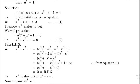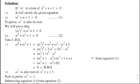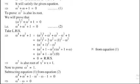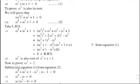Now to prove that omega cube equals 1: subtracting equation 1 from equation 2, that is (omega⁴ + omega² + 1) − (omega² + omega + 1) = 0. So omega⁴ − omega + omega² − omega² + 1 − 1 = 0, giving omega⁴ − omega = 0. Taking omega common: omega(omega³ − 1) = 0, so omega³ = 1.